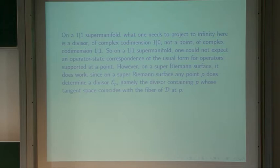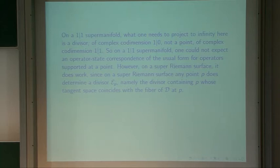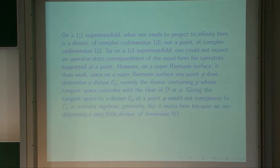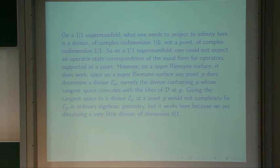Any point on a super-Riemann surface determines a divisor — namely the divisor containing that point whose tangent space is in the direction of the distinguished sub-bundle of the tangent bundle. In ordinary algebraic geometry, giving a point and a direction doesn't determine a divisor. But in dimension 1|1, a point in an odd direction does determine a divisor, because we're considering a very small divisor of dimension 0|1, which is determined by a point in an odd direction.